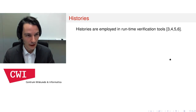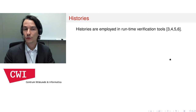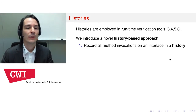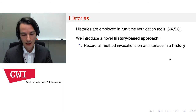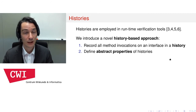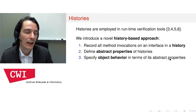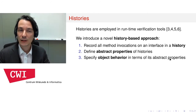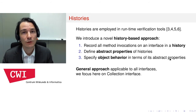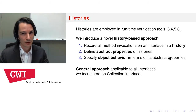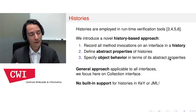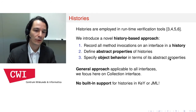The approach we take is based on histories. Histories are known already from runtime verification tools. The main idea is that we record, for a particular interface, all the method invocations that have happened on that interface in an associated history. We can then define abstractions over this history, formulating abstract properties based purely on the history of method calls performed on an interface. We use these abstract properties to specify object behavior — that is, the behavior of objects that implement the interface. This general approach is applicable to all interfaces, but here we specifically focus on the collection interface. There is no built-in support for reasoning about histories in either KeY or JML, so we encode histories to enable reasoning about them in KeY.